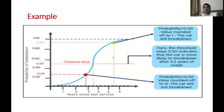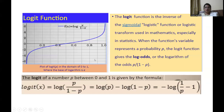This is how the sigmoid helps us to classify a given application. Now let's see how to derive the equation for logistic regression. We start with the logit function, which is the inverse of the sigmoid function — also called the logistic function, widely used in statistics. The logit function gives us the log odds: the logarithm of p / (1 - p), where p is probability ranging between 0 and 1.